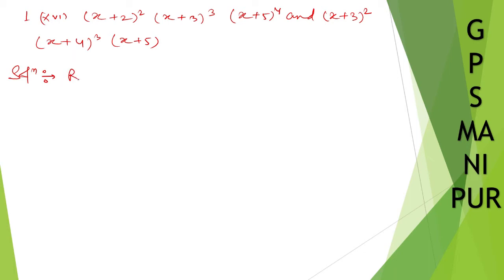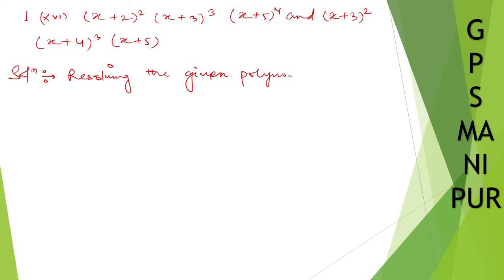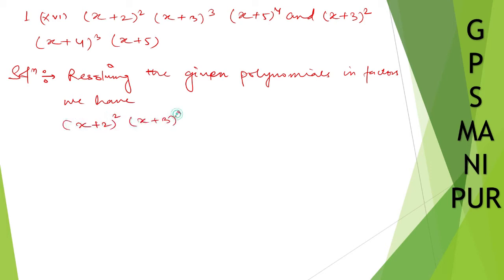Now, resolving the given polynomials into factors. We have the first polynomial: (x plus 2) whole square, (x plus 3) whole cube, (x plus 5) to the power 4.